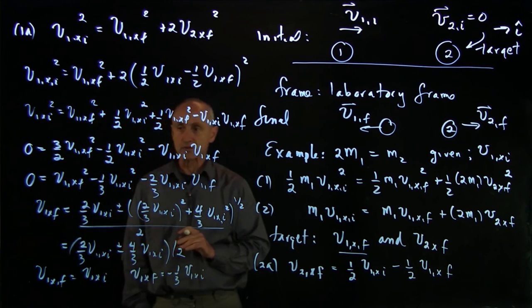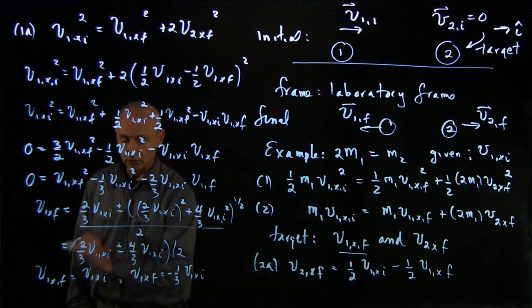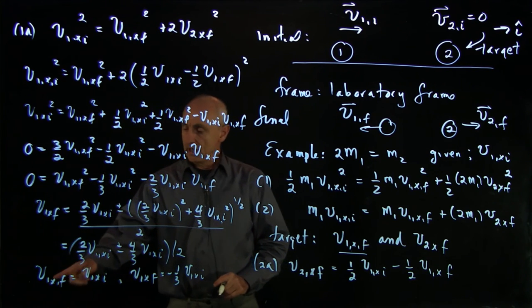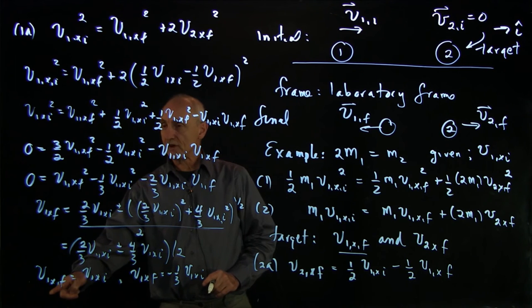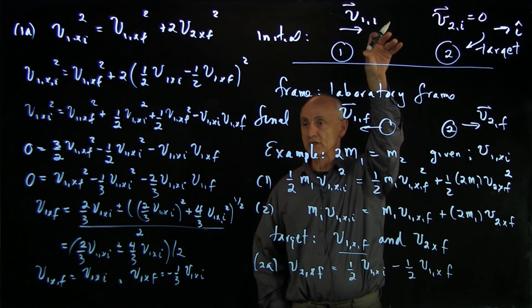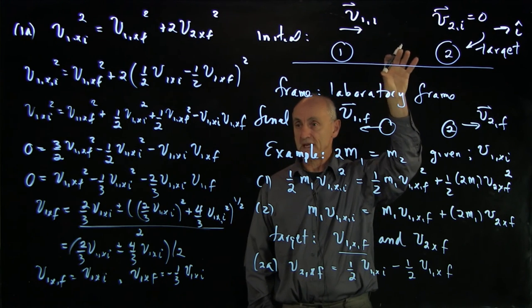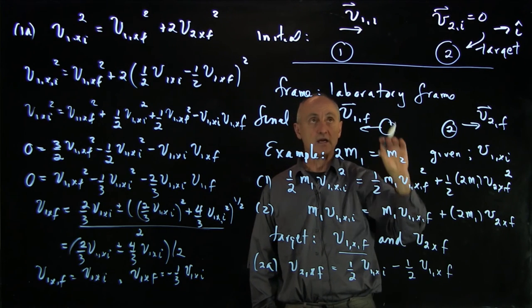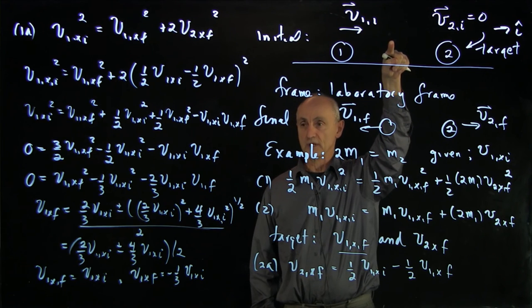Let's think about the meaning of these two possible solutions. This solution has v1x final equals v1x initial. So that's the initial conditions. Just repeat it. And that will always be the case. One solution will describe the initial state,